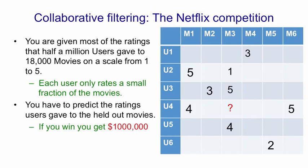You might decide user 4 is quite like user 2 because he rated movie 1 the same way, so maybe like user 2 he hated movie 3. On the other hand, user 4 liked movie 6, so maybe he likes all the movies. By the time you've done that much reasoning, you realise you'd better use some statistics.